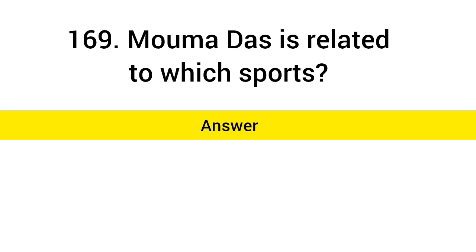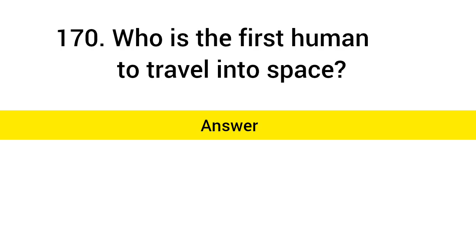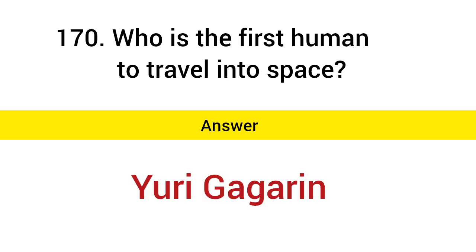Mahamad Das is related to which sport? Answer: Table Tennis. Who is the first human to travel into space? Answer: Yuri Gagarin.